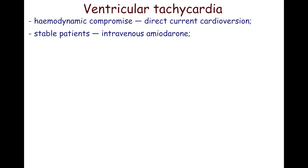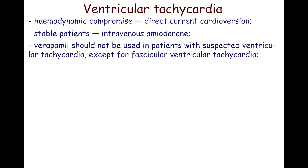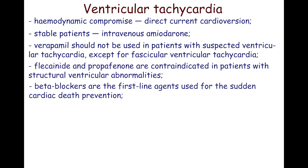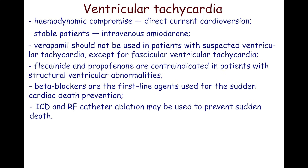Intravenous amiodarone may be used in stable patients with ventricular tachycardia. Verapamil should not be used in patients with suspected ventricular tachycardia, except for fascicular — also called verapamil-sensitive — ventricular tachycardia. Flecainide and propafenone are contraindicated in patients with structural ventricular abnormalities, as they may contribute to ventricular tachycardia. Generally, beta-blockers are the first-line agents for sudden cardiac death prevention. Implanted cardioverter-defibrillator and radiofrequency catheter ablation may also be used to prevent sudden death.